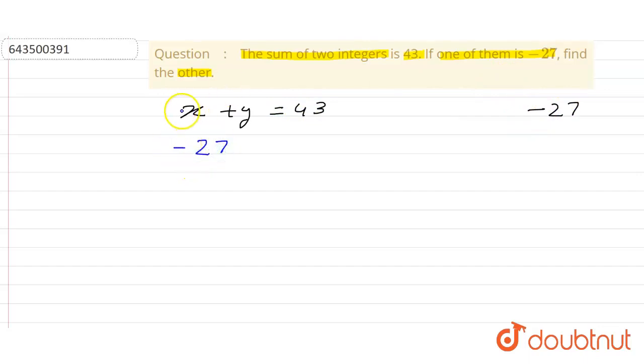So to find out y, what we have to do: 43 minus becomes plus here. If we change the side, the number moved from LHS to RHS, negative sign becomes positive sign.